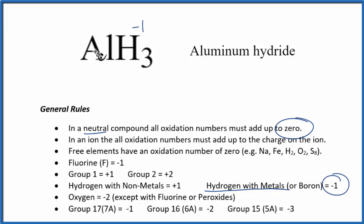And with that information, we can figure the aluminum out. If we have three of these times minus one, that gives us a minus three. To balance that out, to give us this neutral compound where they all add up to zero, this has to be plus three.